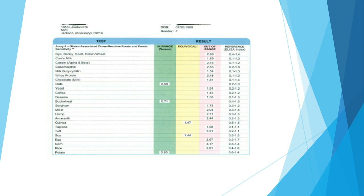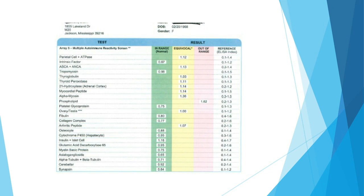We also did a Cyrex test that looked at predictive autoimmune markers. I'm showing you this because we have a before and after, and I just want you to see what a gut protocol can do to help improve the risk for progressive autoimmunity.